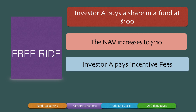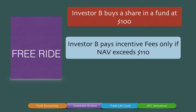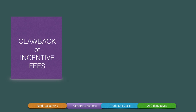After investor A pays the incentive fee, the NAV comes back down to $100. Investor B then buys a share at the new $100. Investor B only pays incentive fees if the NAV exceeds $110, because investor A has already paid incentive fees up to $110 — so $110 now becomes the high watermark. I'm curious to know: between investor A and investor B, who is suffering in this scenario of an open-ended fund? Please explain in the comment section below.